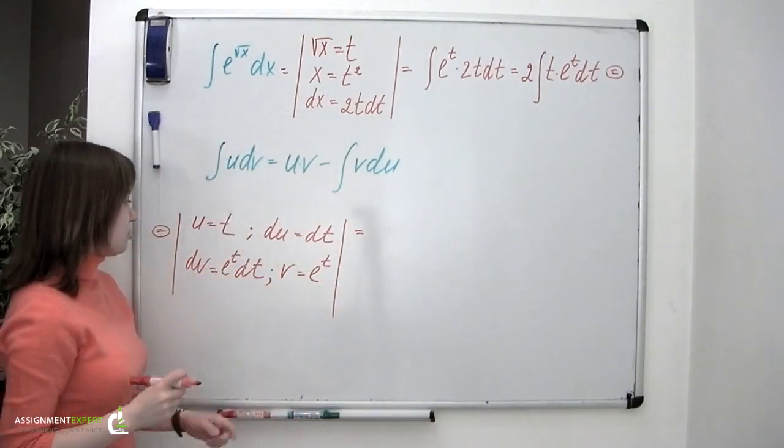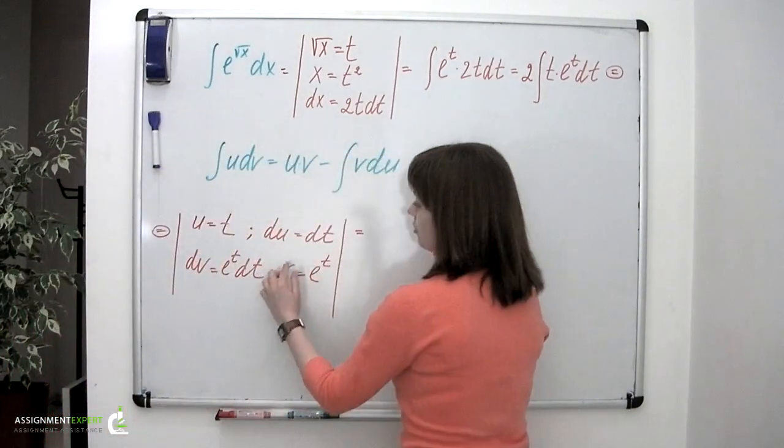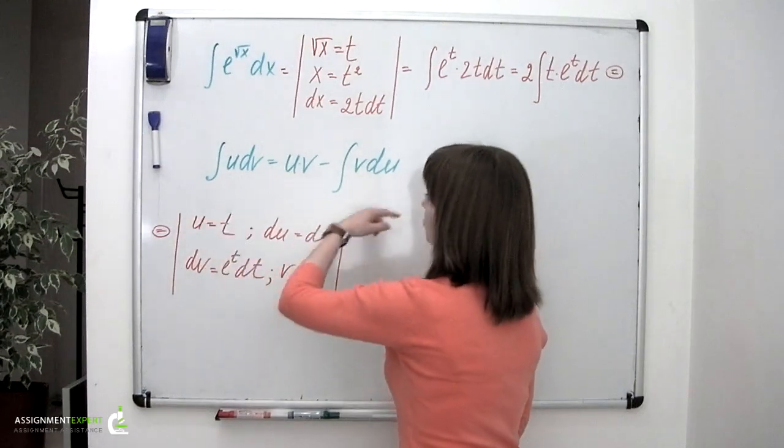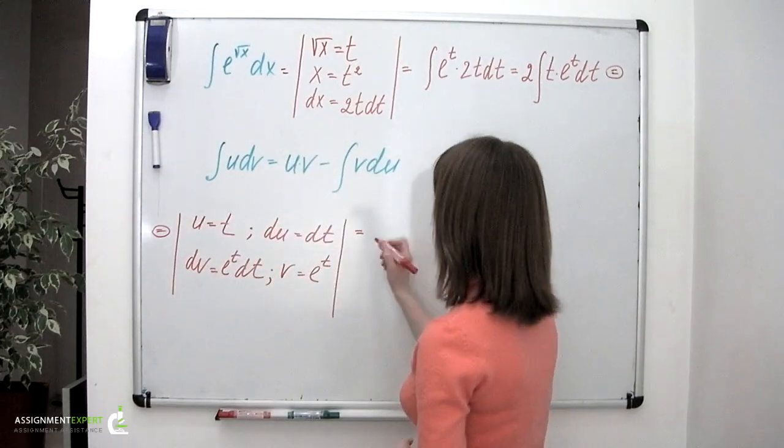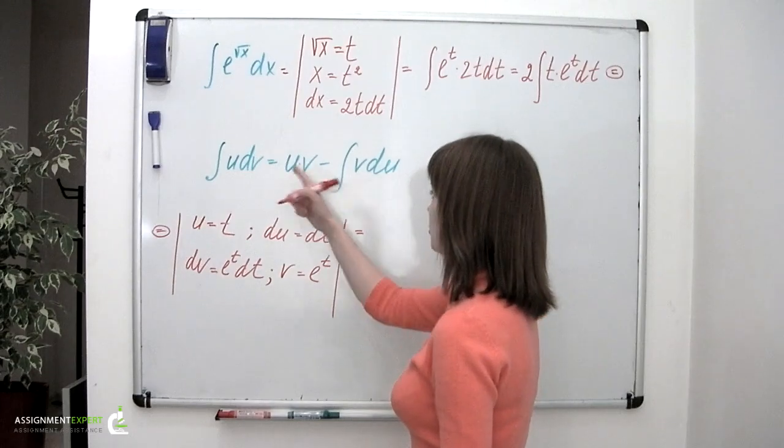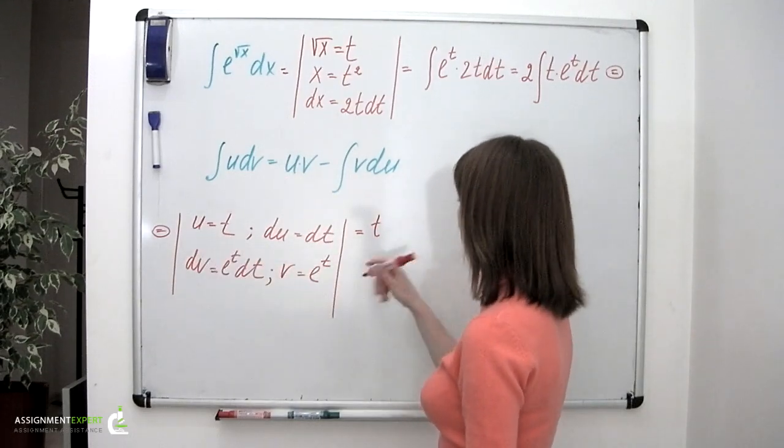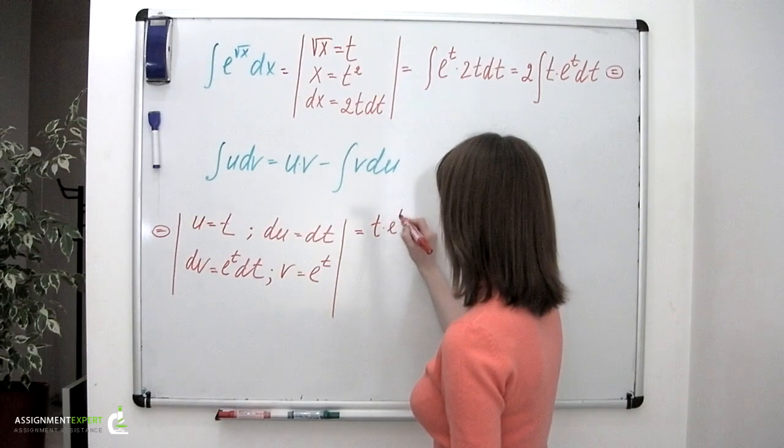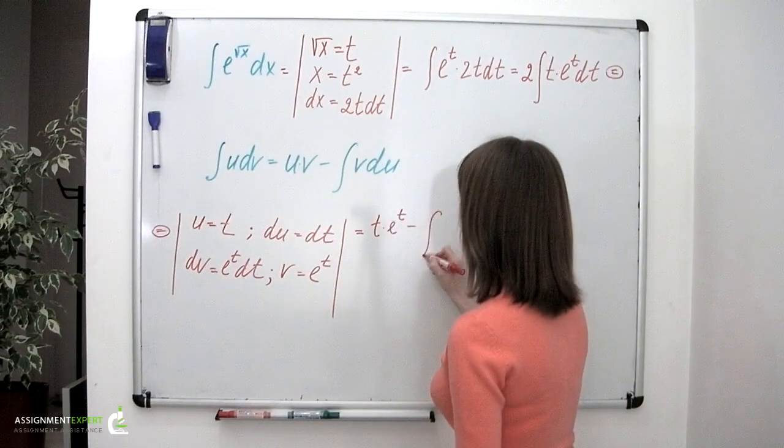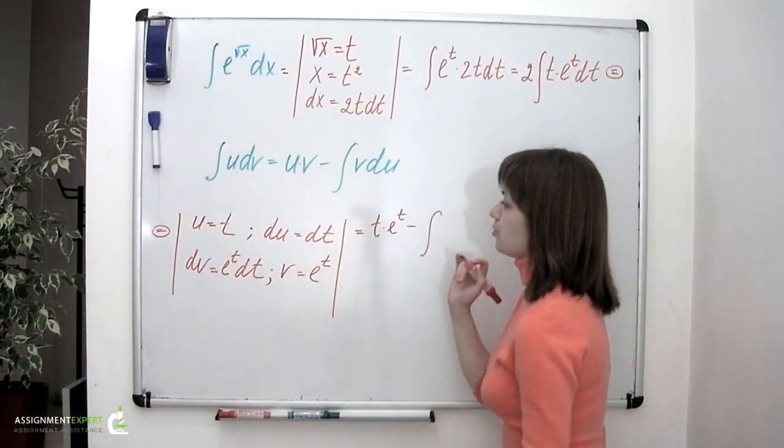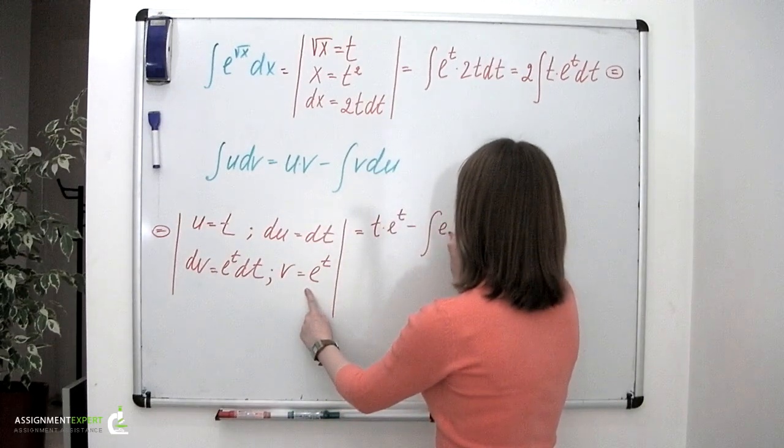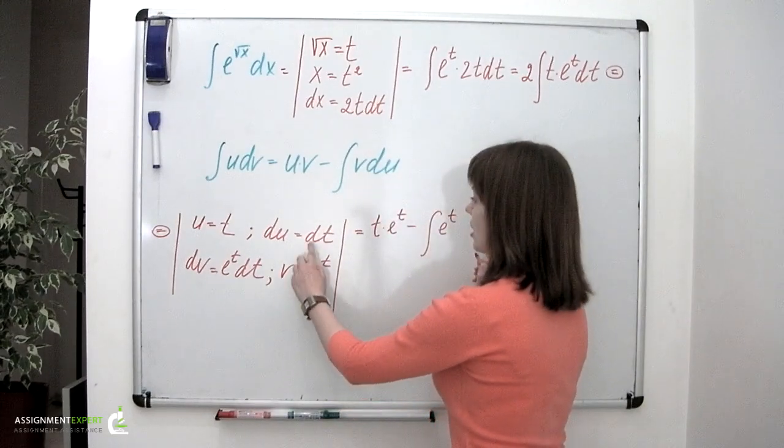Now let's substitute these u, du, v, and dv into the formula and see what happens. So we'll have u times v, which is t times e to the t minus the integral of v du, e to the t times dt.